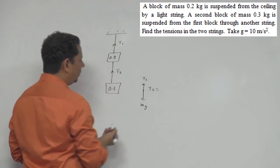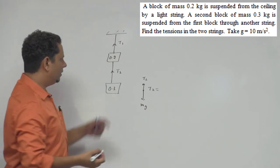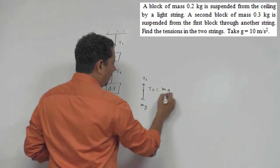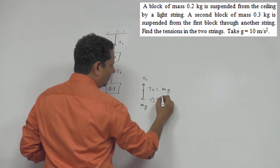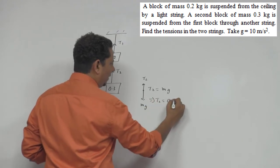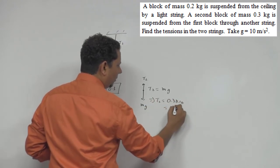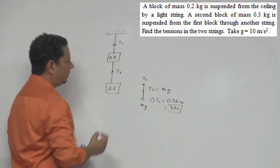So, इस case में क्योंकि equilibrium है, bodies कोई move नहीं कर रही है, so T2 will be equal to Mg. और this will be equal to, which implies T2 will be equal to M, इसका है 0.3 multiplied by 10, that will be equal to 3 N. तो इसकी tension तो आपकी 3 N आगई.